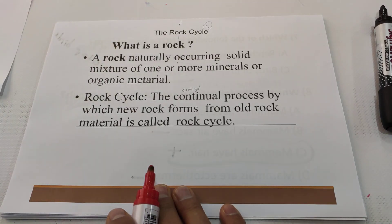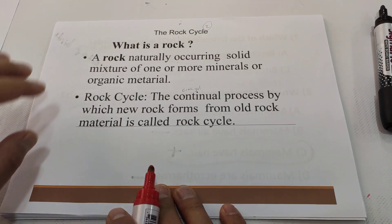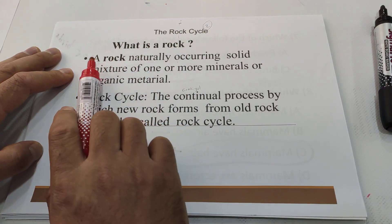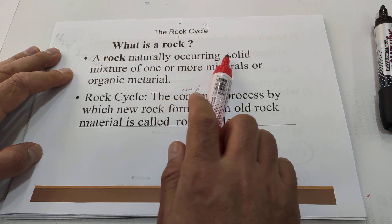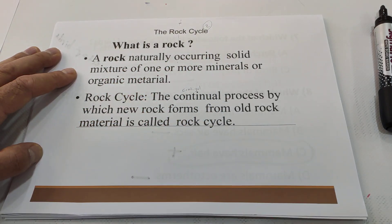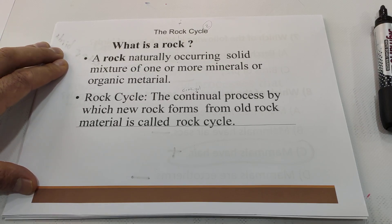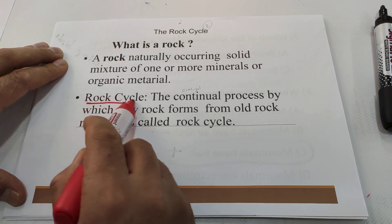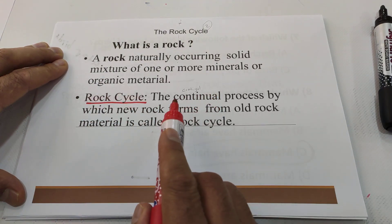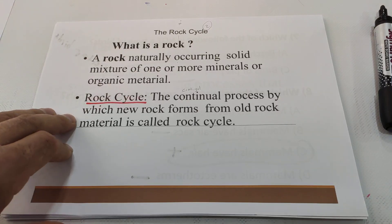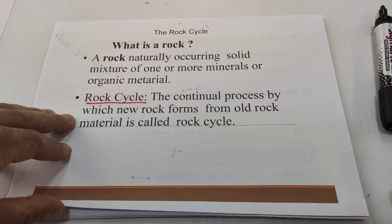First, the rock cycle from section one. What is a rock? A rock is a naturally occurring solid mixture of one or more minerals or organic material. Minerals are inorganic, so rocks contain both organic and inorganic material together. The rock cycle is the continual process by which new rock forms from old rock material.